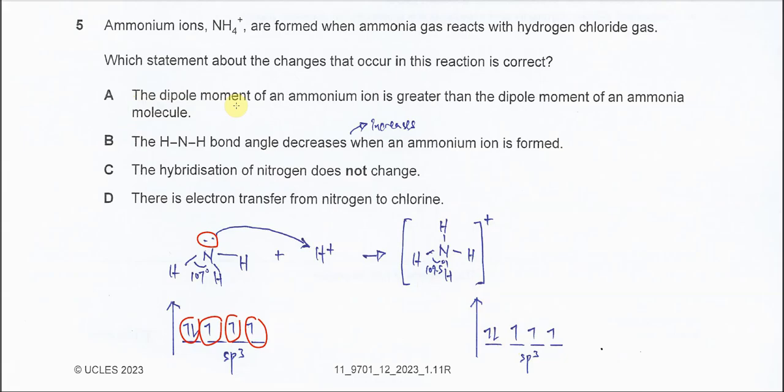The dipole moment of the ammonium is greater than the dipole moment of the ammonia molecule. So the ammonium is actually a charged particle. A dipole moment most likely refers to the partial charge positive negative. So this comparison is not really that correct. Therefore A is not the answer.